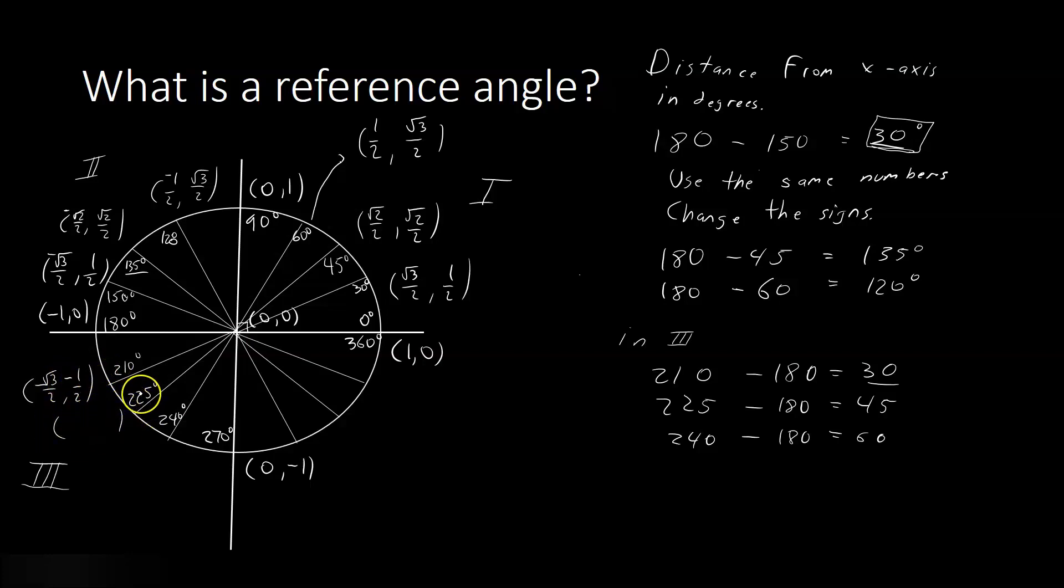For the same reason, at 225 degrees, we use a reference angle of 45 and use the numbers from 45. Square root of 2 over 2, square root of 2 over 2, and make them both negative. And at 240, same thing, we use 60. We'll have 1 half, comma root of 3 over 2, and put negative signs on them both.